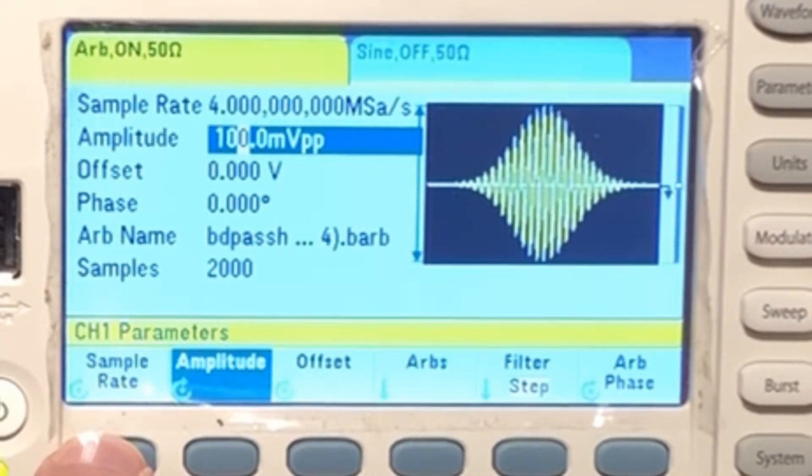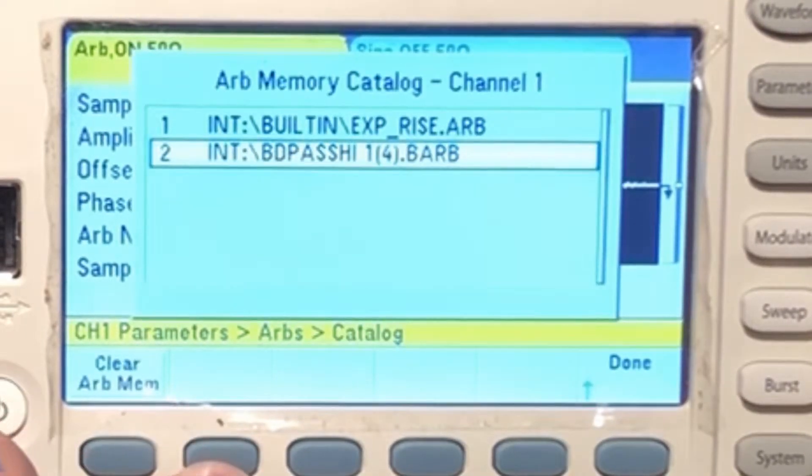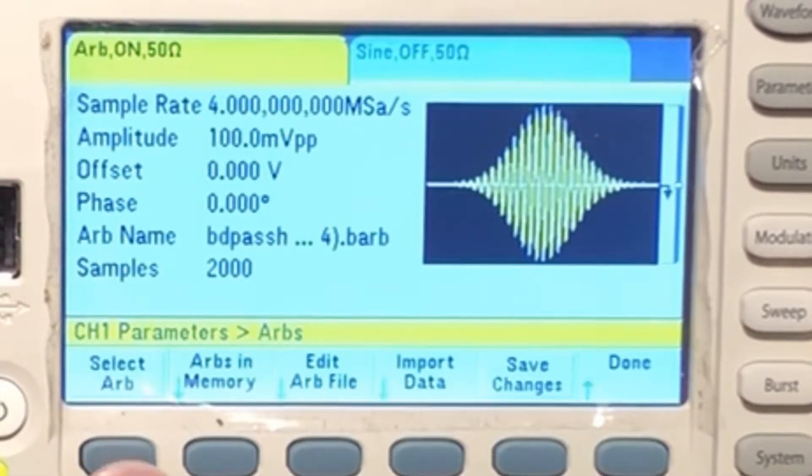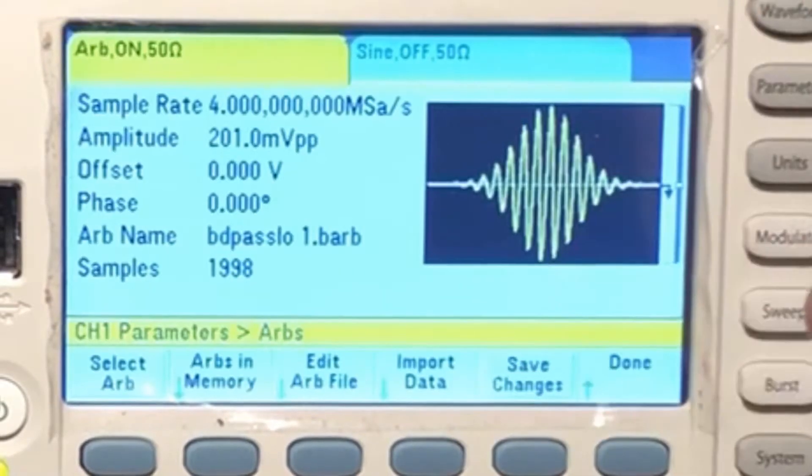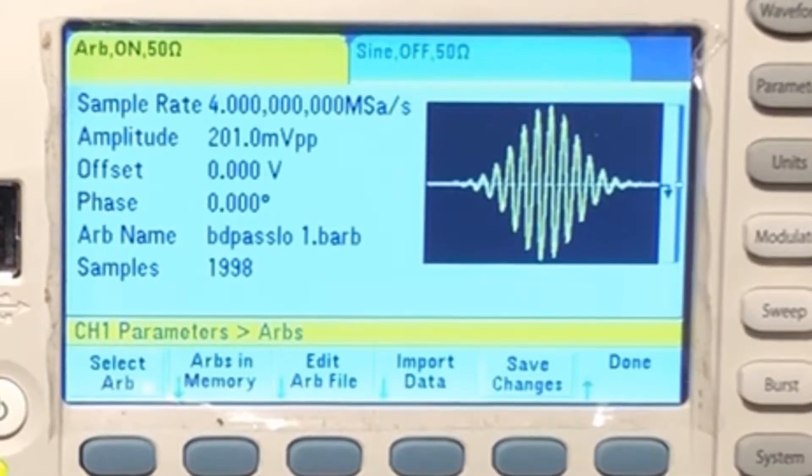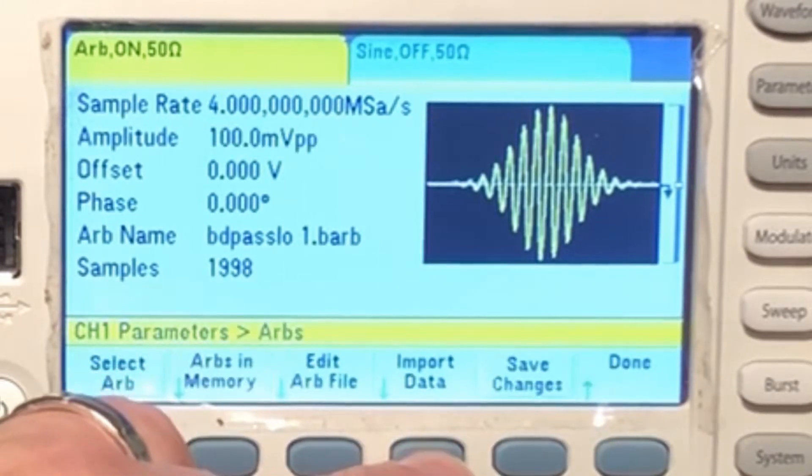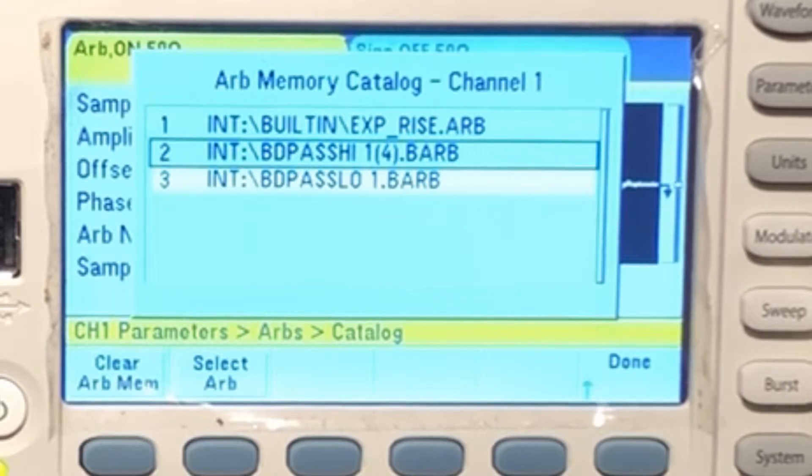So that's actually setting that. Now go back to arbs. Now I can choose arbs and memory. I can see that there's the band pass high which I had just done and I've reloaded that. If I go in and let's choose a different arb file, let's do the band pass low. Select, that's also at a different sample rate. So I want to go in there and change the parameter. I can choose sample rate or I can change amplitude. Let's make that 100 millivolts. So now that's set there. That's now what's in memory. Now if I go back and choose the band, now I have both of these loaded. I can go back and select the band pass high and say done.